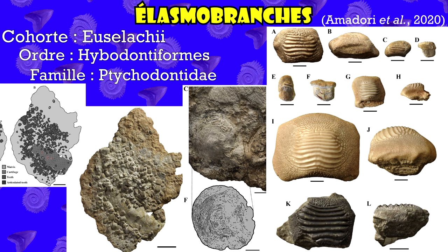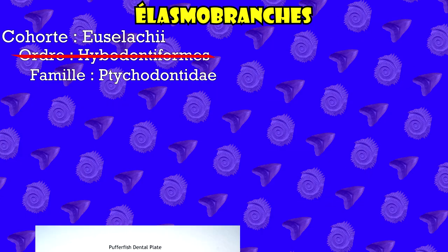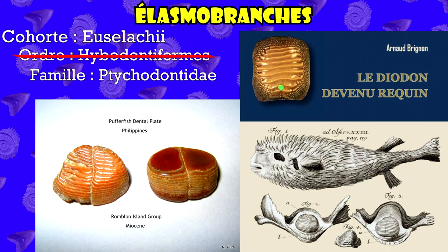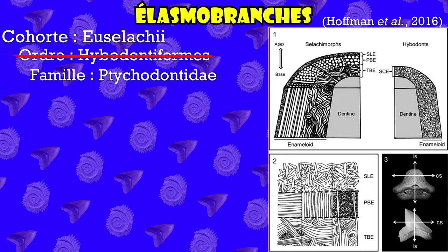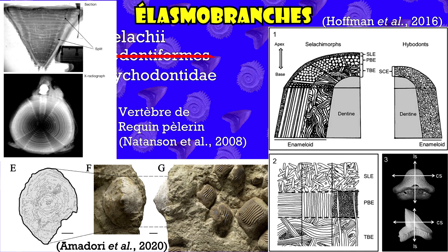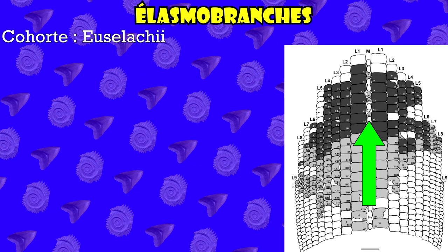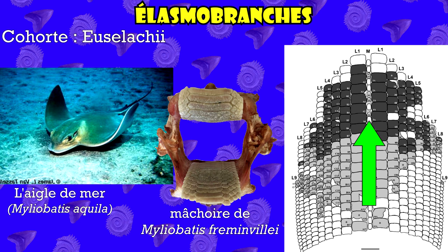L'appartenance des ptichodontes aux hybodontes n'est pas si simple. On a tout d'abord pensé qu'il s'agissait d'un poisson globe, car les dents se ressemblent vaguement. Puis il a été déplacé dans l'ordre des hybodontes. Cependant, les ptichodontes possèdent des dents avec un émail à trois couches, comme les requins et raies modernes, ainsi que des centres vertébraux calcifiés — une autre caractéristique des requins modernes. Il semble aussi posséder un renouvellement dentaire en tapis comme les myliobatidés, bien que ces deux groupes n'aient jamais vécu au même moment et que leurs dents soient très différentes.